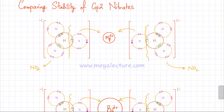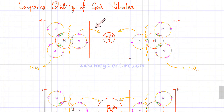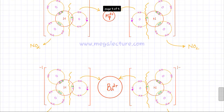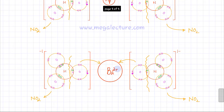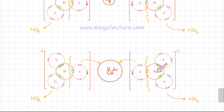I'm going to compare the stability of group 2 nitrates. I have two group 2 nitrates drawn. One is magnesium nitrate, where a magnesium ion is bonded to two nitrate ions — NO₃⁻ on either side and Mg²⁺ in the middle. The other one, lower down in group 2, is barium nitrate — a barium ion in the middle with two nitrate ions on either side.